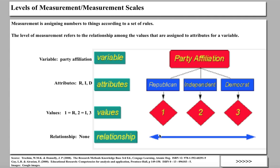The relationship here, in this example, is that there is no relationship. These are not numbers that can be compared. Republicans are not better than Independents, and Independents are not better than Democrats — these are just categories or names. The important point is that the level of measurement refers to a relationship about values that have been assigned to the attributes of the variable under study. Here, political affiliation is under study, broken into three attributes, values are assigned, and we examine the relationship — and here there is no relationship.